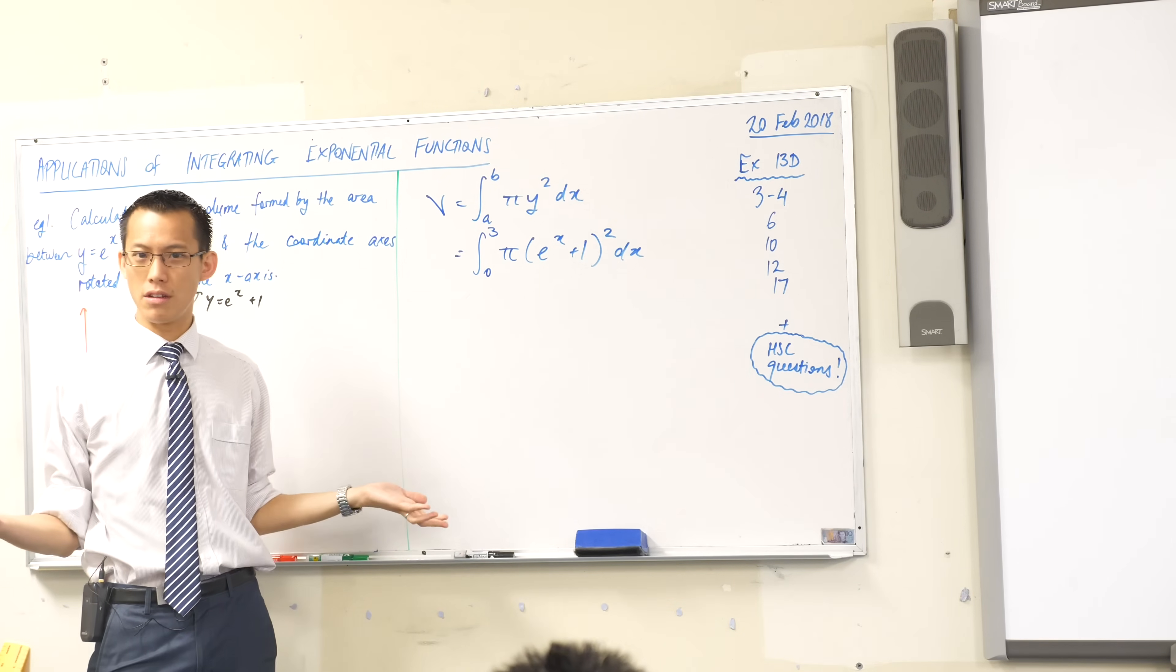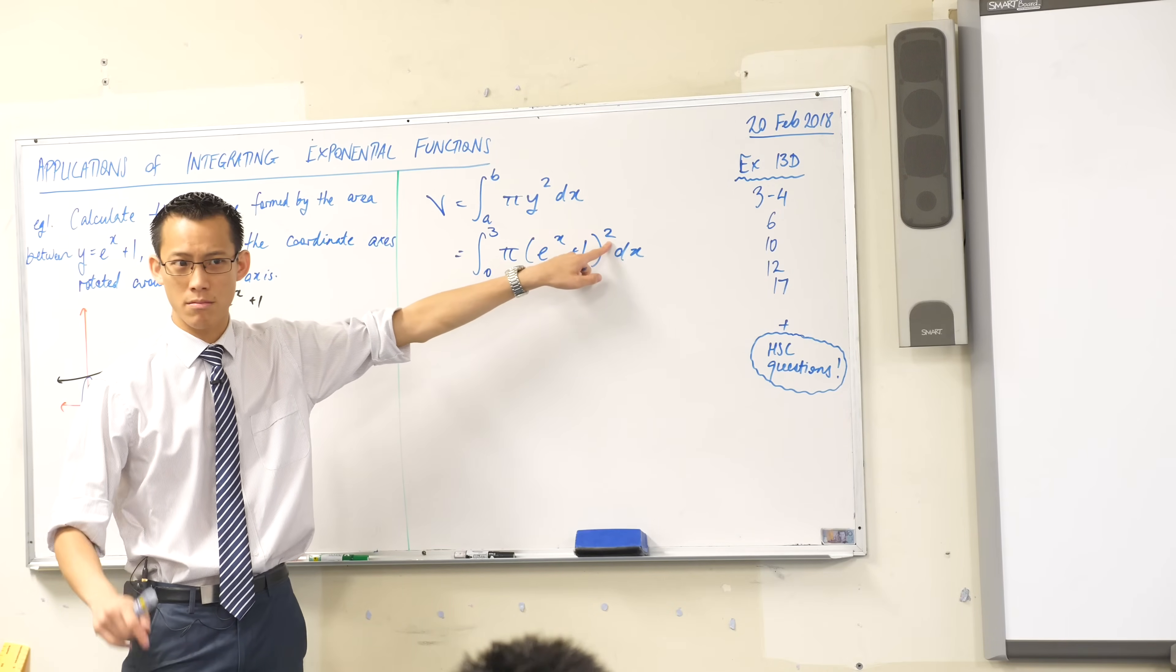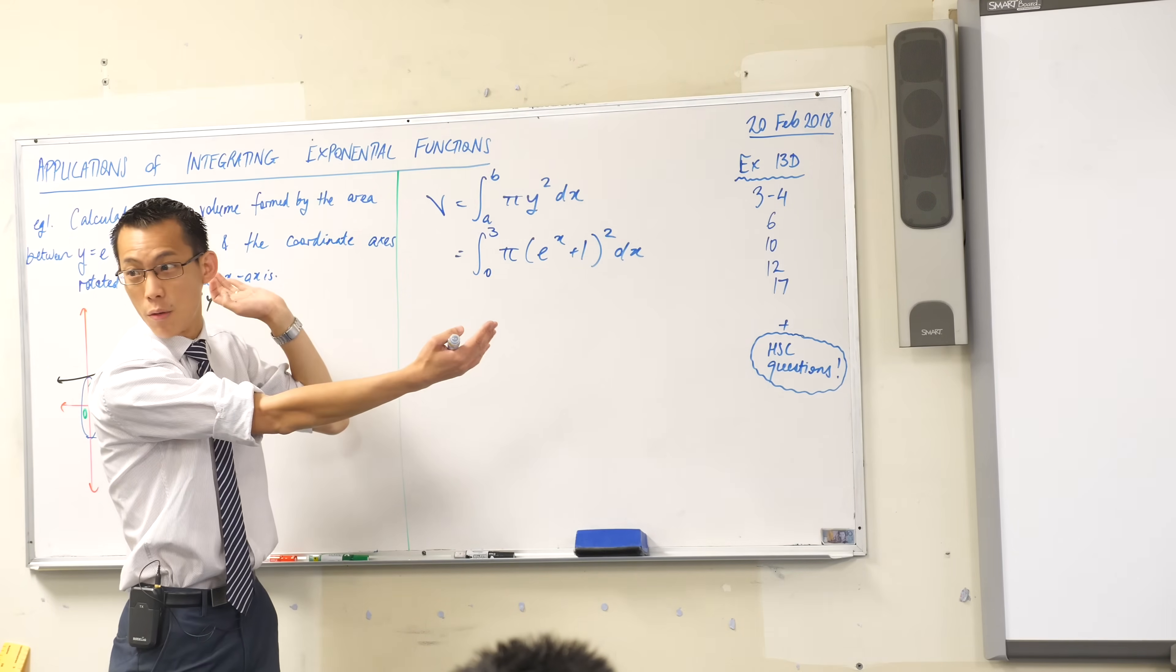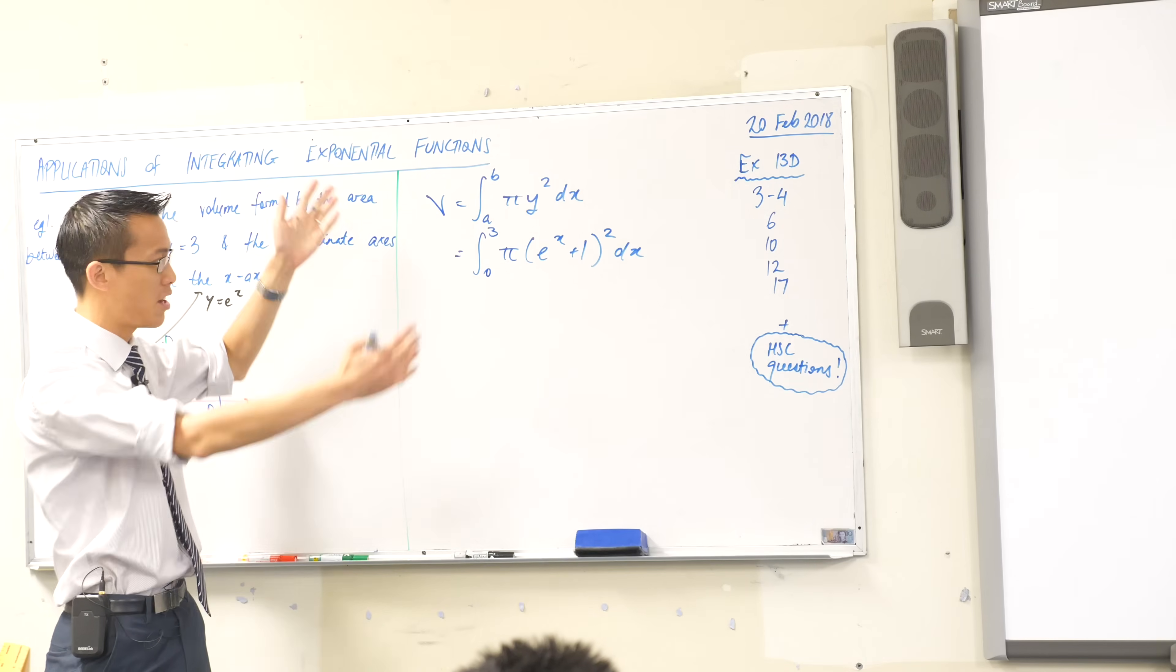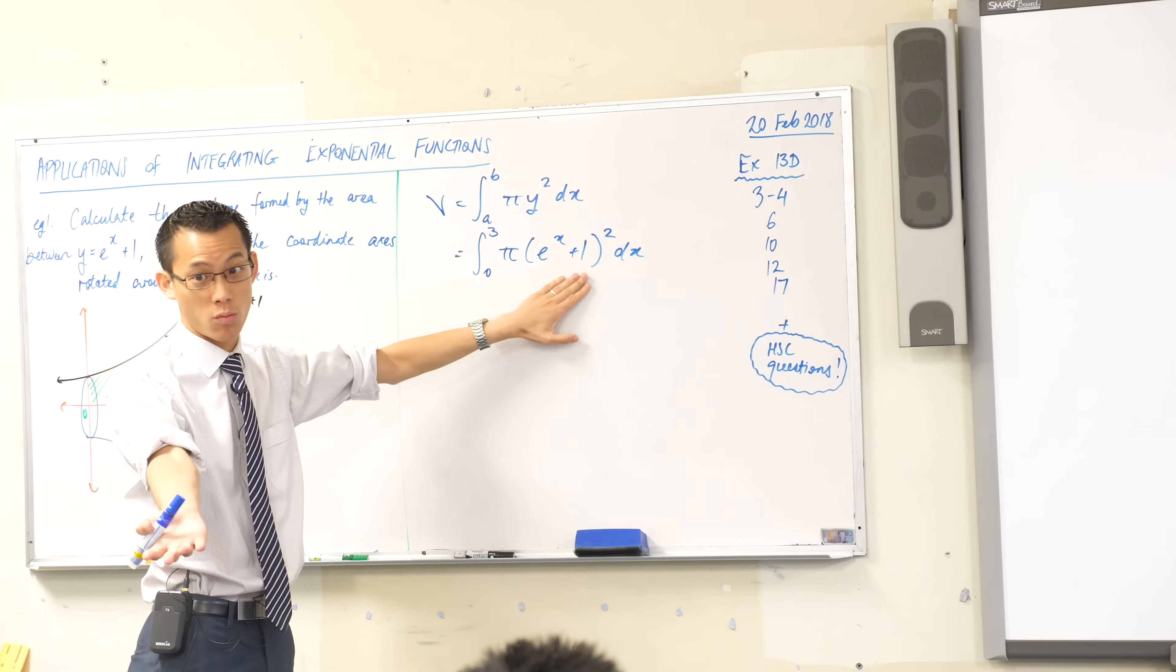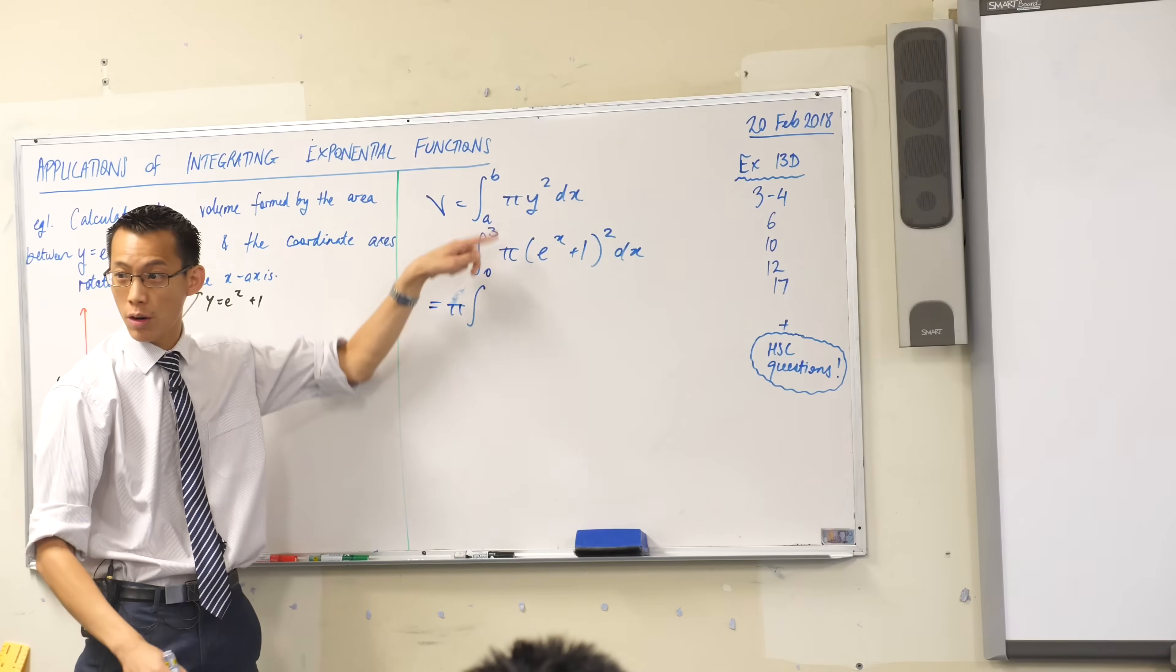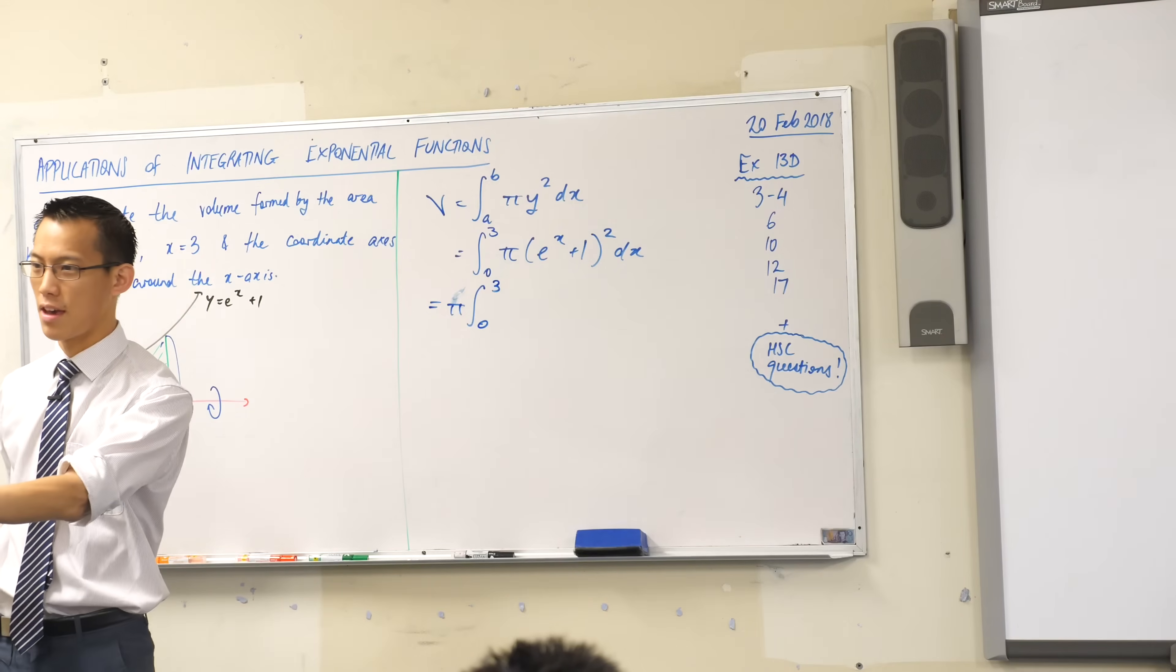So what else can I do? If I can't use reverse chain rule, how else can I deal with this power? Expanding is the other way to go. Now usually we would say this is simpler than the expanded form, and we always try to avoid expanding. But in this case, because reverse chain rule doesn't work, you're sort of left without options. So this is a good enough time to put the pi out the front. I'm going from 0 to 3. Now just be careful.